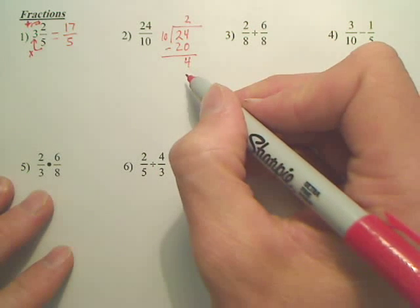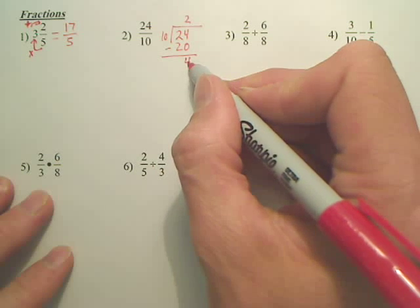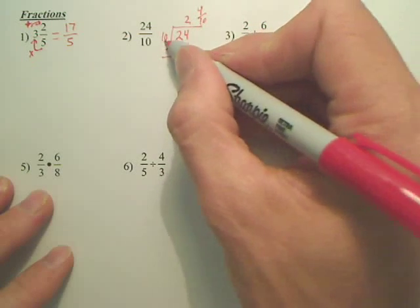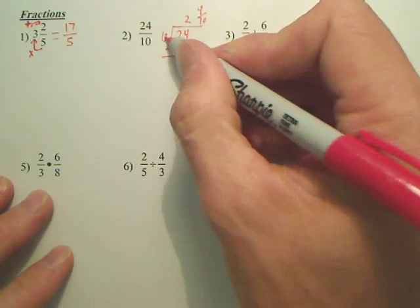24 minus 20 is 4. My answer, I take this 4, I bring it up here. It's my remainder. It's out of 10s. So it's 2 and 4 tenths.